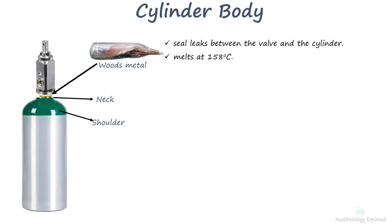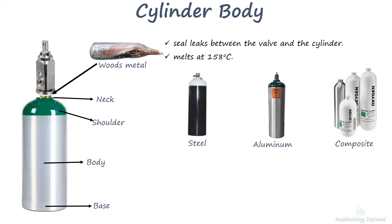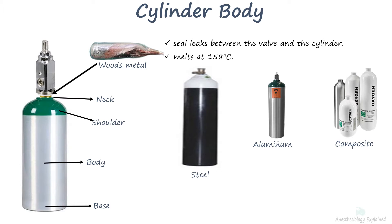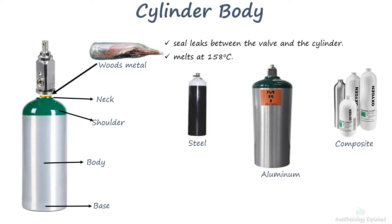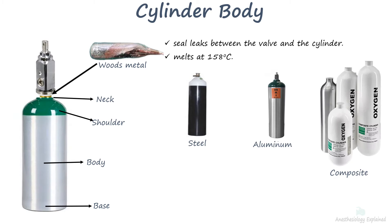Cylinders have a flat or concave base. The body of medical gas cylinders were traditionally constructed of steel, but now they are constructed of lightweight chrome molybdenum steel, aluminum, or a composite such as aluminum wrapped in carbon fiber.